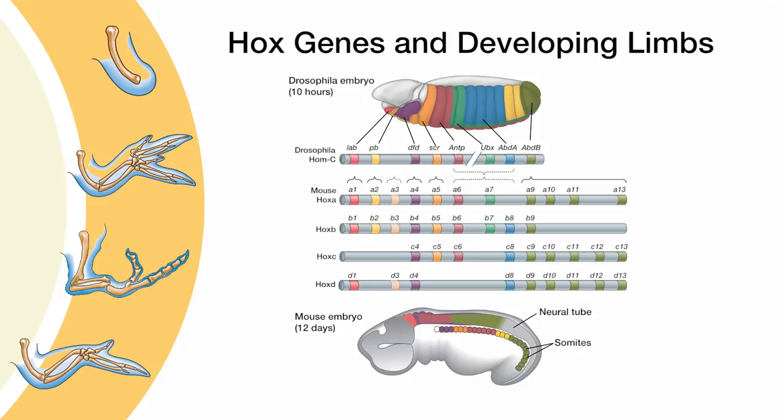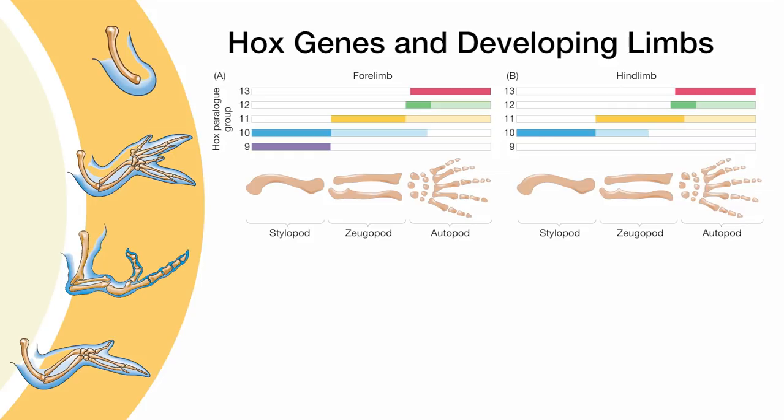Collinearity, recall, is the predominant correlation of the order of Hox gene expression along a given axis of the embryo matching the 3' to 5' position of these genes along the chromosome. In both the forelimb and hind limb, more 3' Hox paralog groups are expressed more proximal, whereas more 5' position Hox genes are sequentially expressed in more distal tissues of the limb.